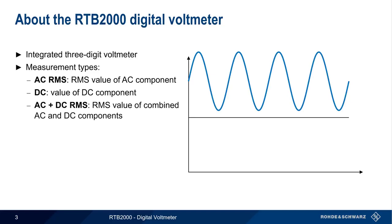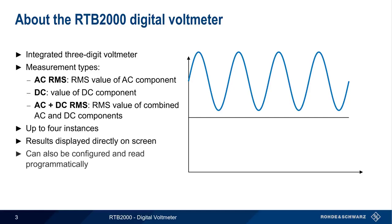The RTB supports up to four separate but simultaneous instances of the digital voltmeter. Results are displayed directly on the screen, but it's also possible to use programmatic control to configure and read values from the different meters. In the remainder of this presentation, we'll show step-by-step how to configure and use these digital voltmeters.